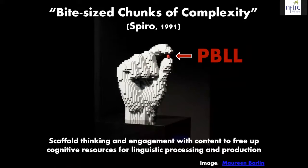Research around spiral would suggest that rather than oversimplifying everything, what we really ought to be doing is giving learners bite-sized chunks of complexity. The idea is that we should be scaffolding their thinking and engagement with content to free up the cognitive resources — the mental resources — they need to process and produce language, so that by carefully structuring the content and organizing their engagement with it, they have more resources available.